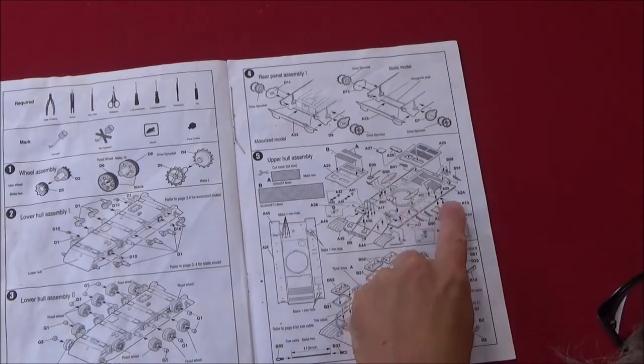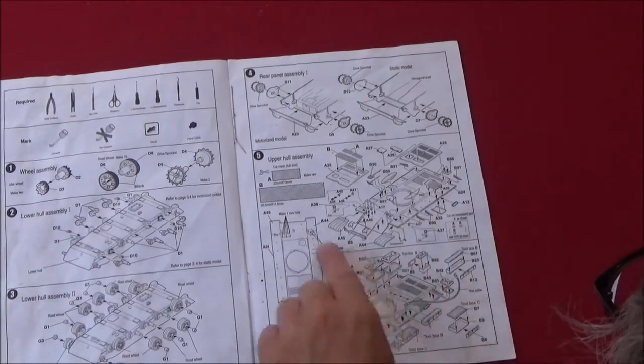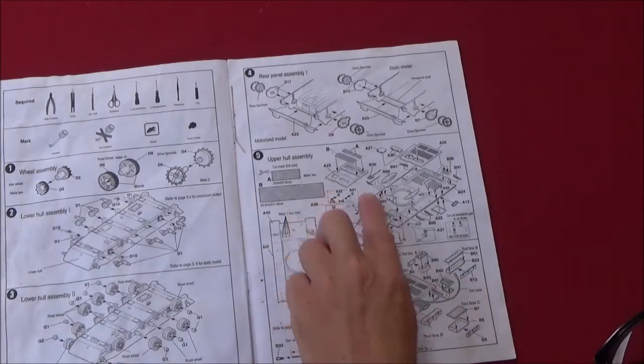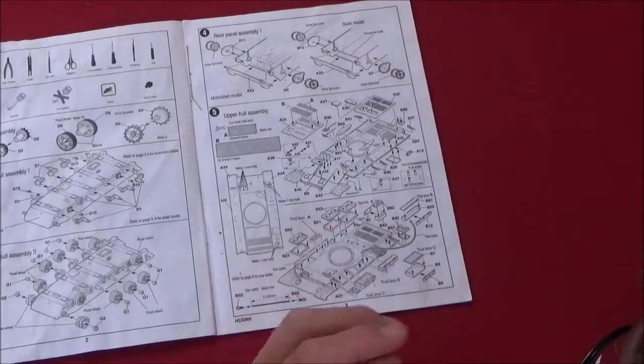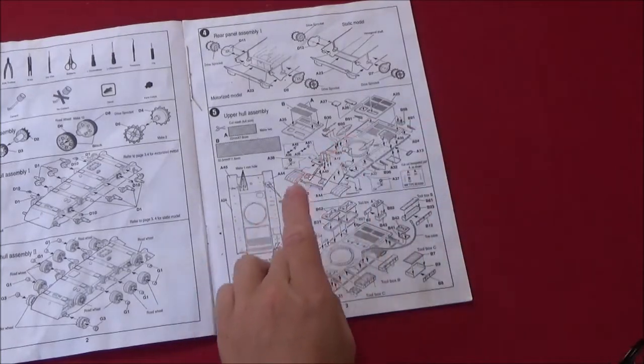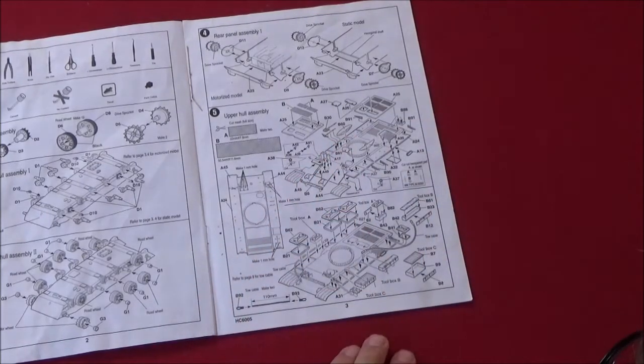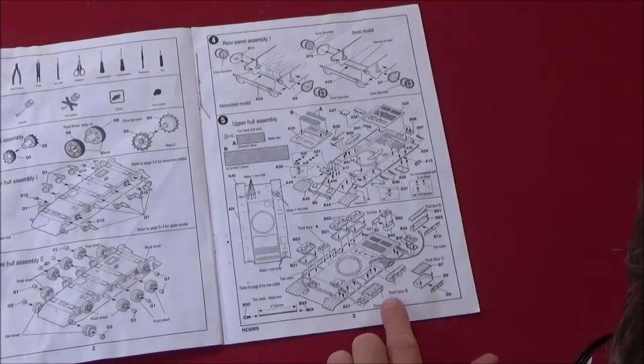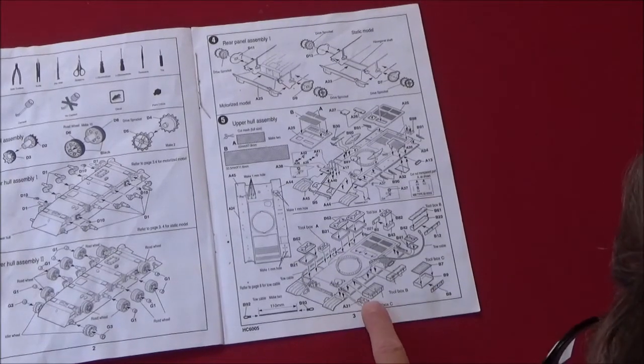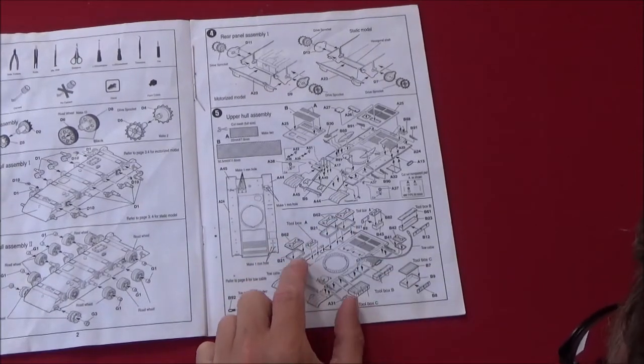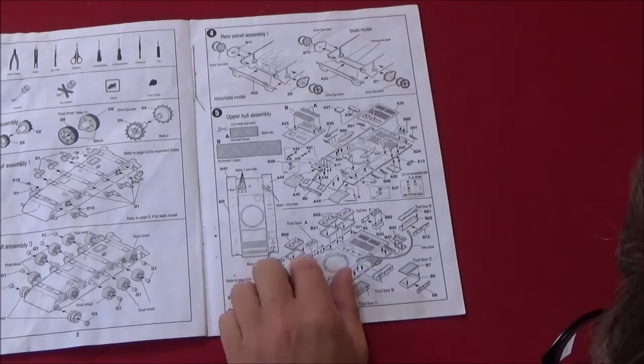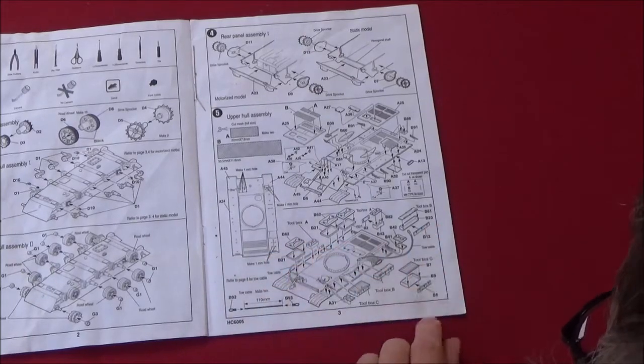And here are the hull sides, the exhaust cover. A whole lot of detail, some of the tools. Here you have all the sponson boxes here. These kind of look like fuel tanks, I don't know exactly, it doesn't say what they are. Some of them you got tool boxes and stuff, tow cable.